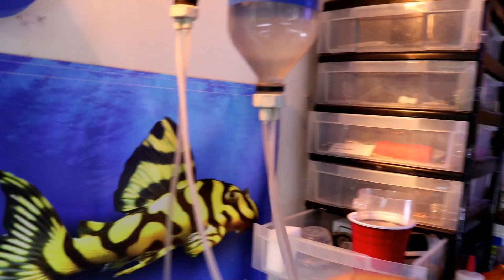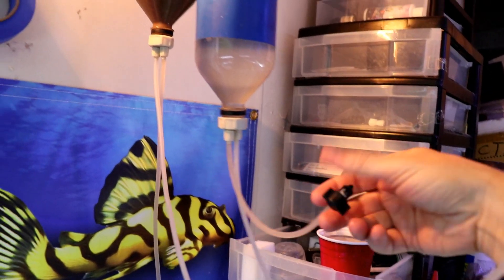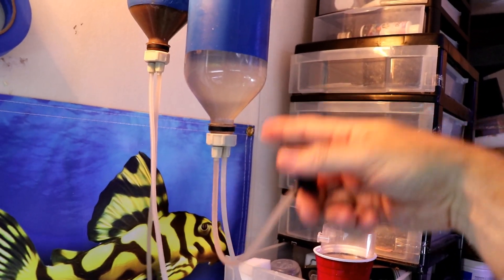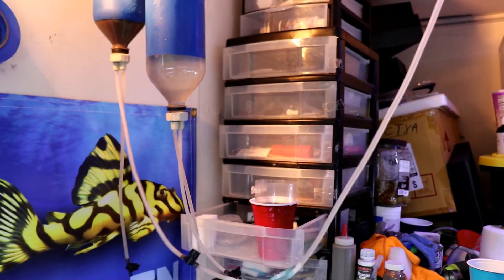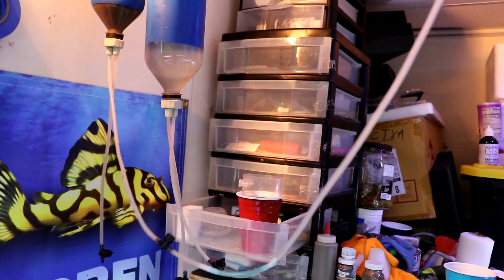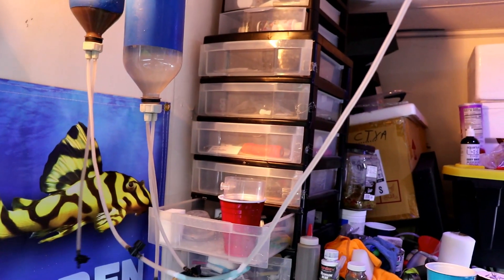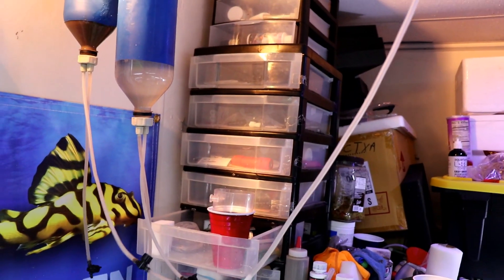So then when you take this thing and open it, you're letting out all of the baby brine shrimp and some of the water and you're not getting any of the eggs in there, because you want to avoid getting the eggs in there because if babies ingest those eggs in most cases it's gonna kill them.